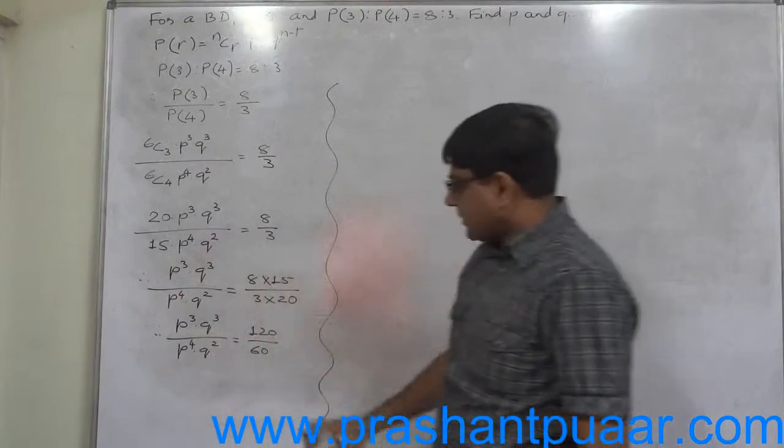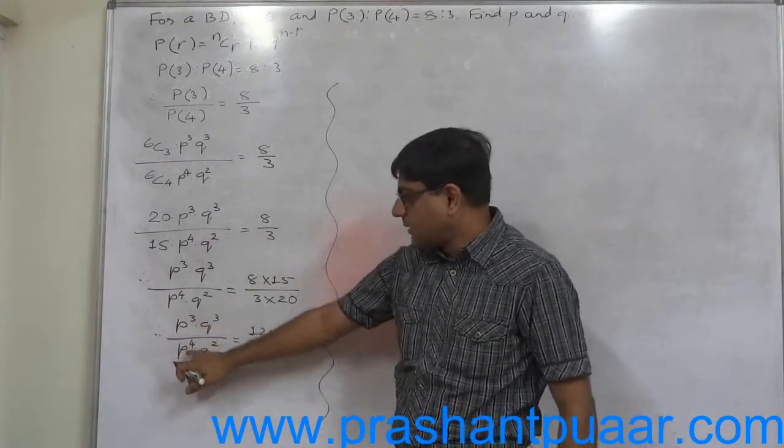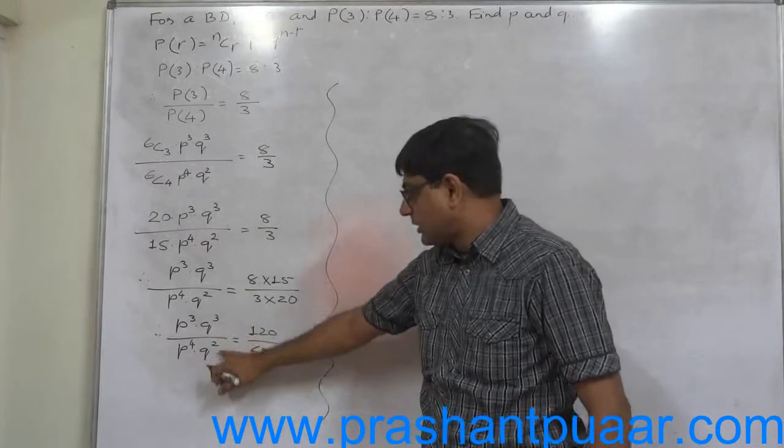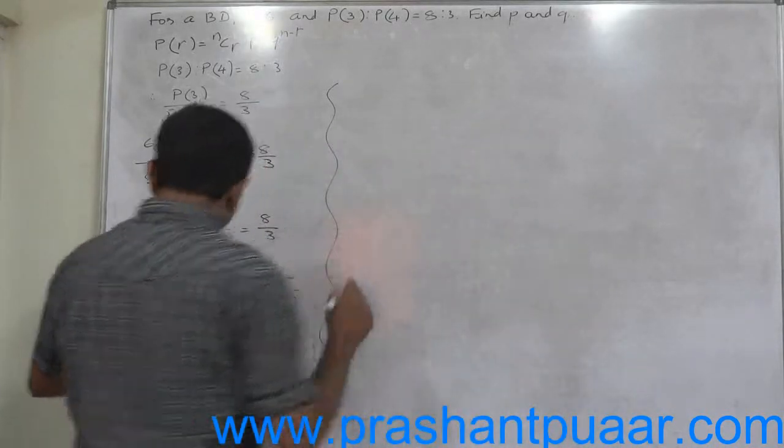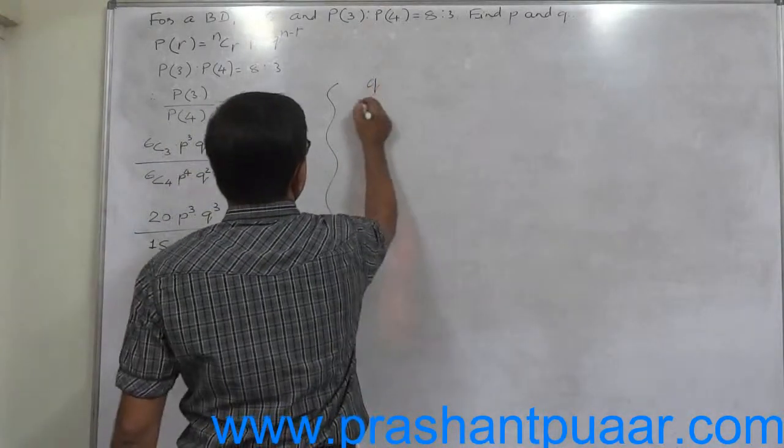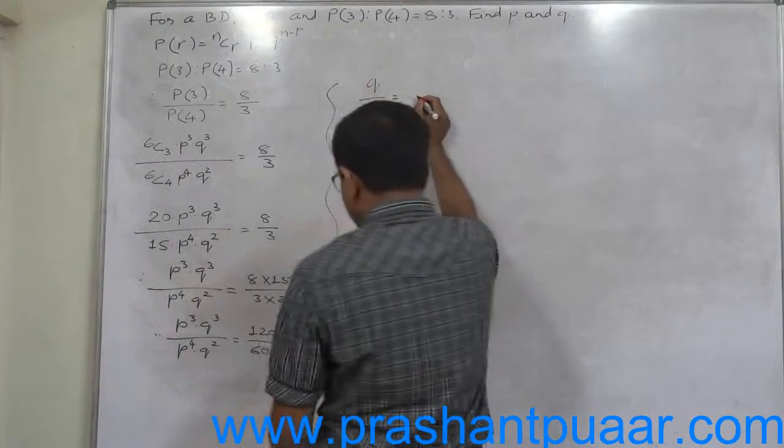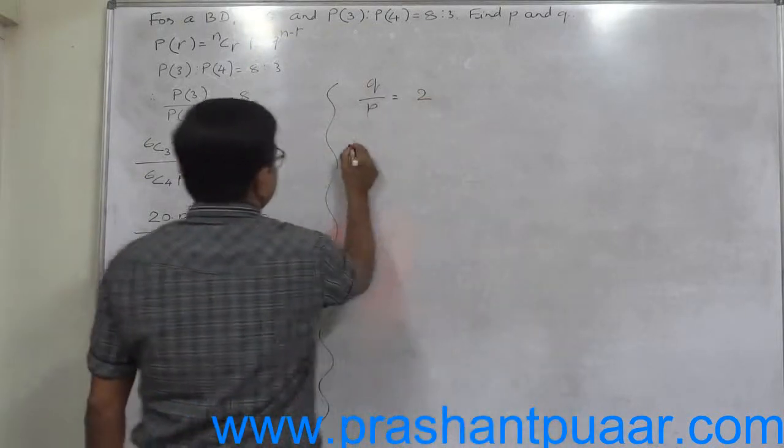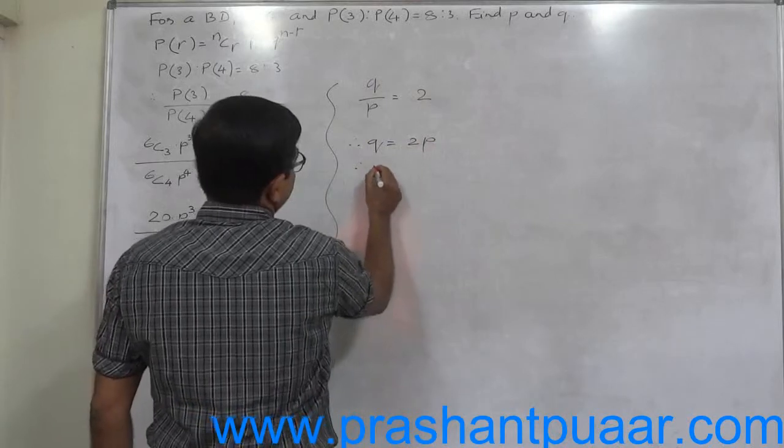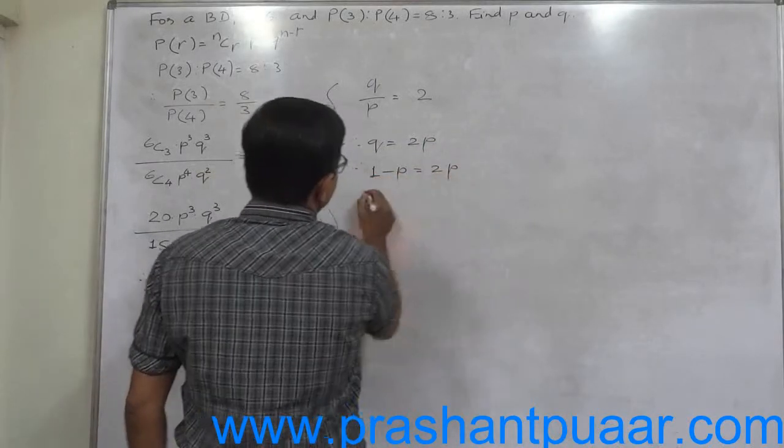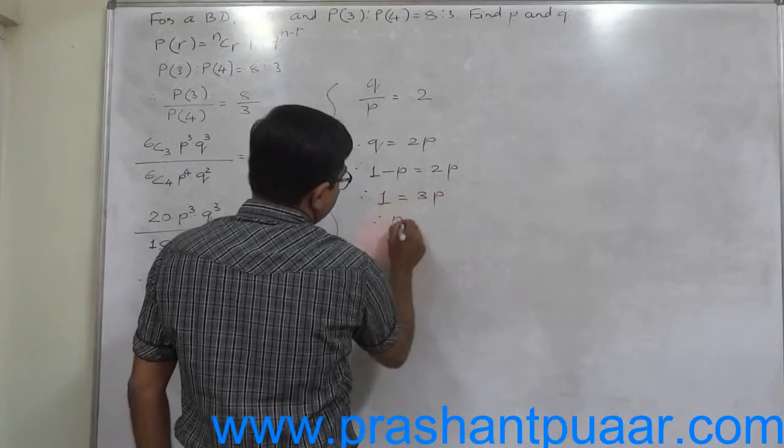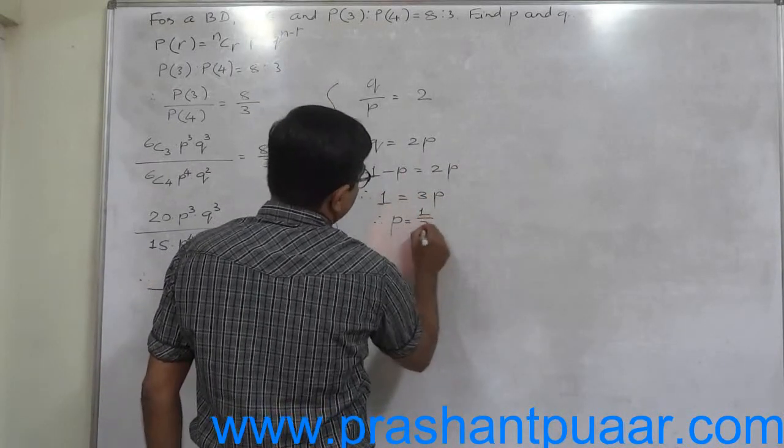Now simplify the equation. P raise to 3 upon P raise to 4 and Q raise to 3 upon Q raise to 2, so it is ultimately Q by P. Q by P equals to 2, that means Q equals to 2P. That means 1 minus P equals to 2P, that means 1 equals to 3P, and therefore P equals to 1 by 3.